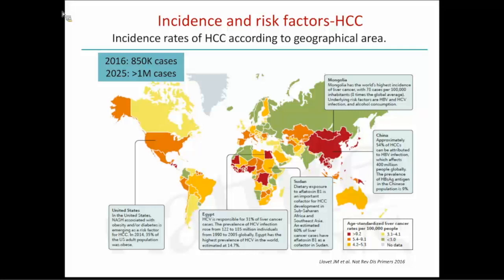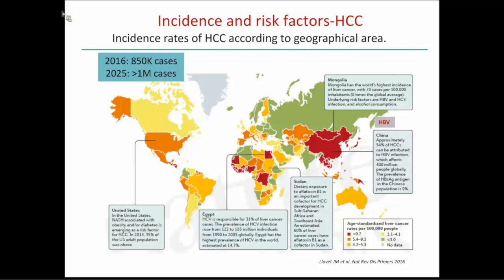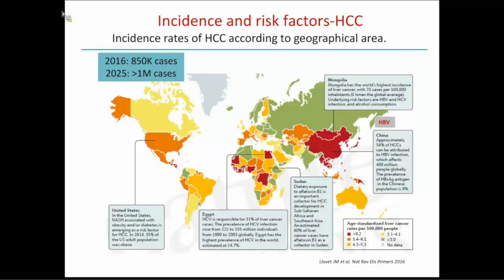This slide tries to summarize the main risk factors for HCC development, using one country as an example. The most important risk factor is hepatitis B virus infection, which accounts for 54% of HCC cases. I chose China because it is the country with the highest number of patients — almost half of the global incidence of HCC. The prevalence of hepatitis B virus infection in China is 9%, and globally around 400 million people are infected.